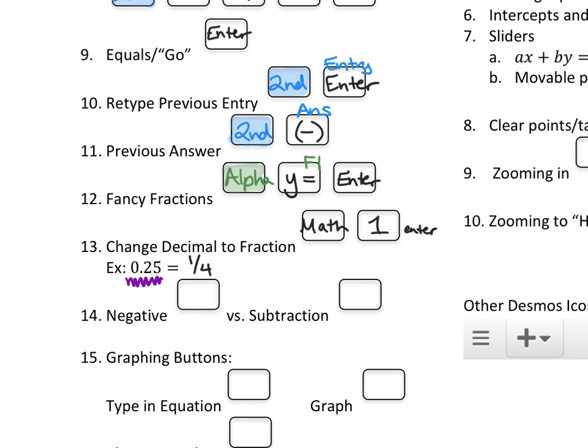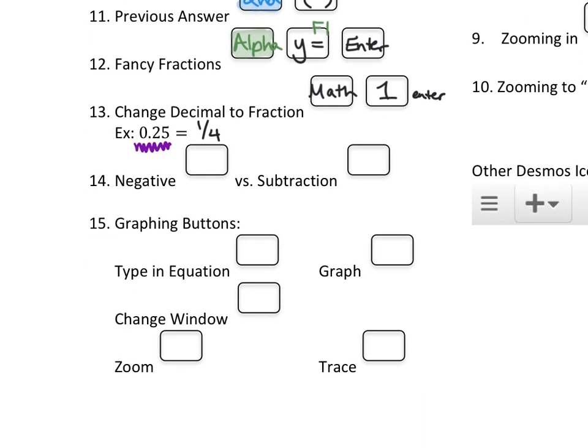A couple more things about these calculators. There is a difference between negative and subtraction on these calculators. On Desmos, there was no difference so it didn't matter for you to know. But there 1,000% is a difference on these calculators. If you're trying to use a negative sign, like make a number negative 5, you press the button with the parentheses around it. It is littler when you type it than a minus sign. The subtraction or the minus sign is just the regular minus sign along the side in the gray buttons. We have to know and utilize the difference between those so we get the right answer. Your calculator will be like error if you did it wrong.